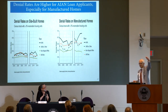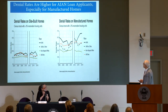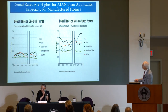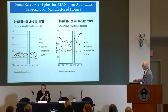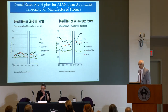Denial rates here mean: of all applications that either result in a loan, a lender refusal, or a borrower walking away after approval. For stick-built or site-built homes in census tracts overlapping reservations, denial rates are in the 15–30% range for all races. American Indian borrowers at the top — the black line — are denied at around a 25% rate on average, higher than all other racial groups. When we shift to manufactured homes, everyone moves up, but American Indian denial rates are again at the top — in the 55% to 70% range in recent years.